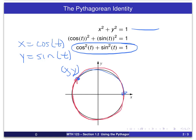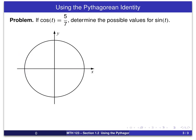So here's our problem. If we know the value of the cosine of t, in this case 5 sevenths, what we want to do is determine the possible values for sine of t. I put the unit circle here because that's useful in at least visualizing what the solution to the problem would look like.